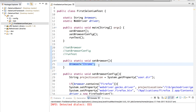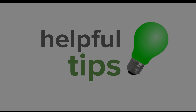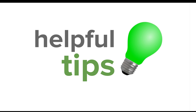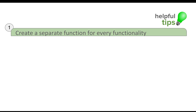In coming sessions we will also see how we can pass the browser from an external file so we do not have to change it in the code at all. But for now, these are the four simple steps we have used to make our code modular. Let us look at some useful tips.